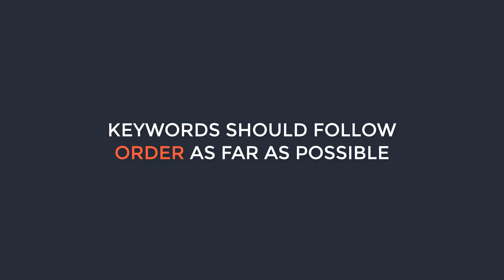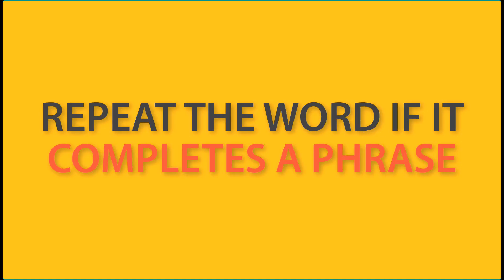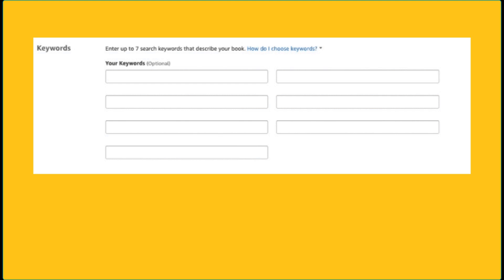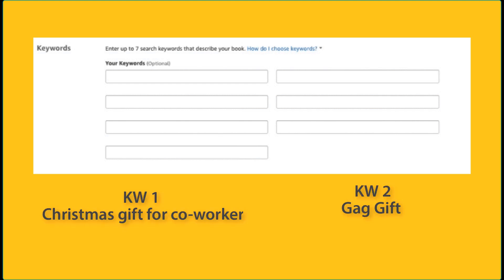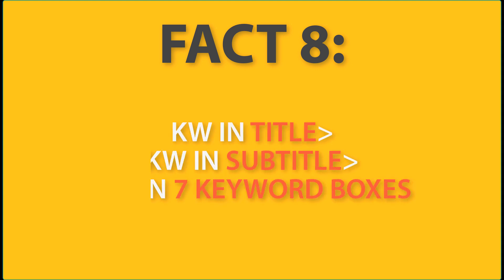In some instances you may want to repeat a word. For example, if your two target keywords are 'Christmas gift for co-workers' and 'gag gift,' both share the word 'gift.' You should use the word 'gift' in both, since Amazon prioritizes phrases in a particular order. Finally, keywords used in the title have far more ranking potential than those in the subtitle, and subtitle keywords rank higher than those in the seven keyword boxes.